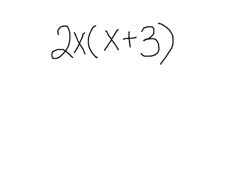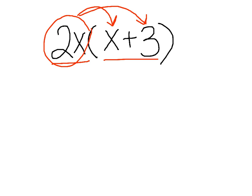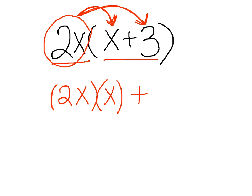Let's take a look at an example we already learned — multiplying polynomials by monomials. Our monomial was 2x and our polynomial was x plus 3. We used the distributive property by taking our outside term and multiplying it to each term inside the parentheses, each term of the polynomial. So that ended up being 2x times x plus 2x times 3.